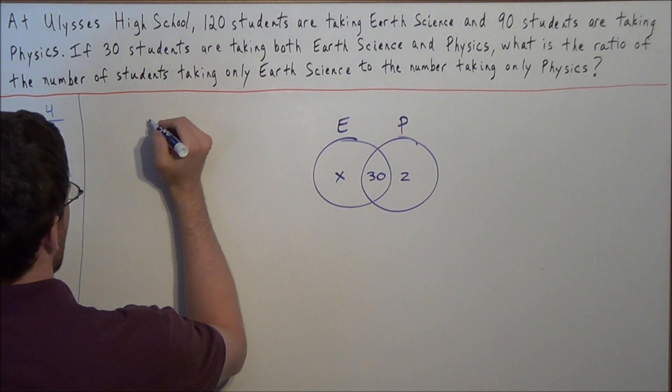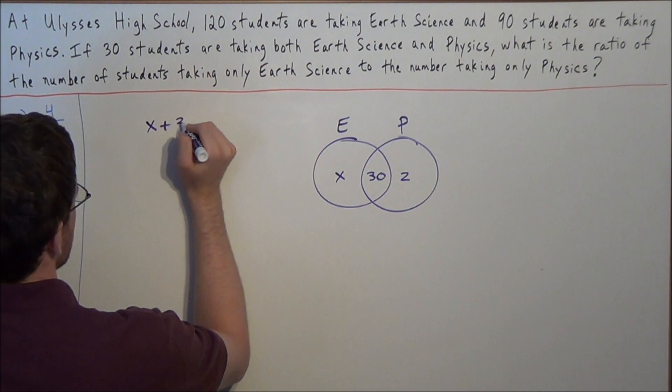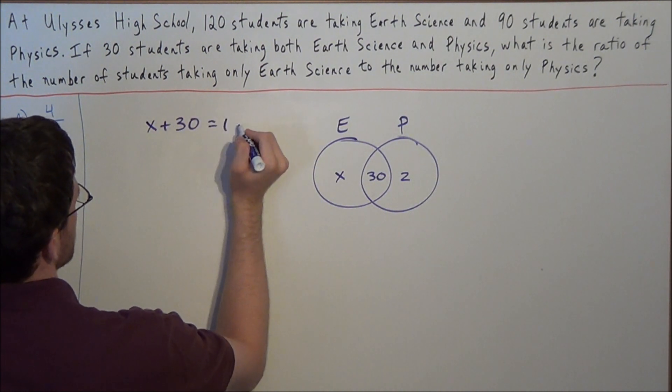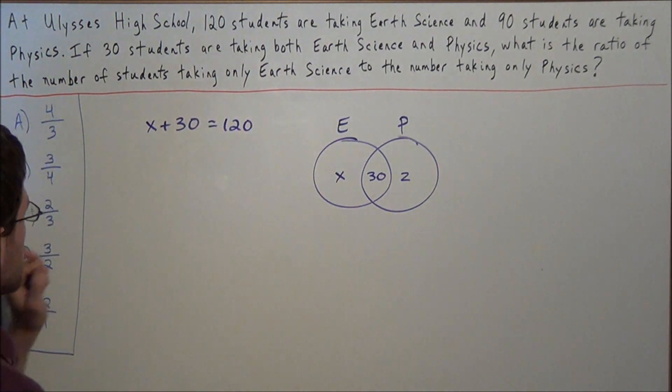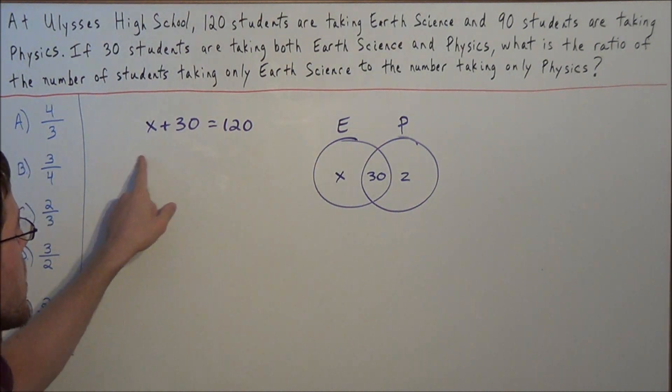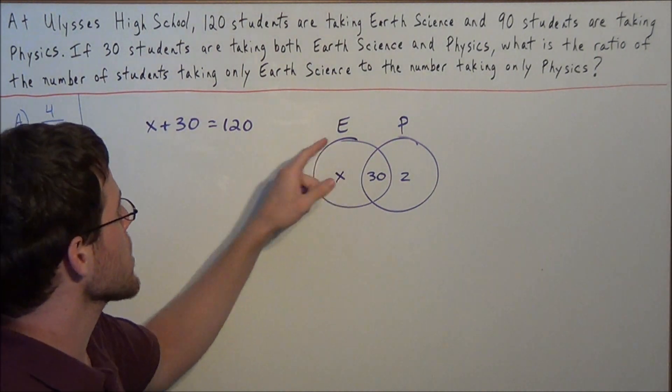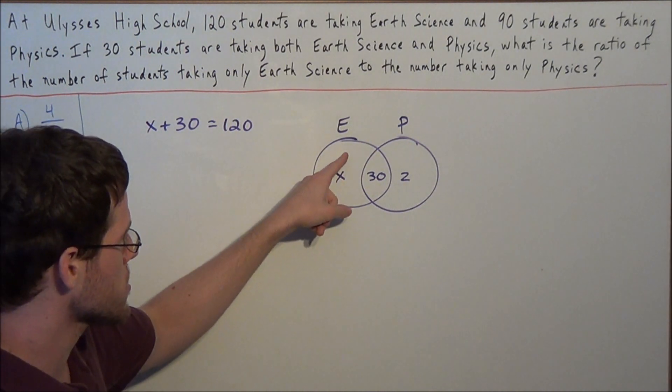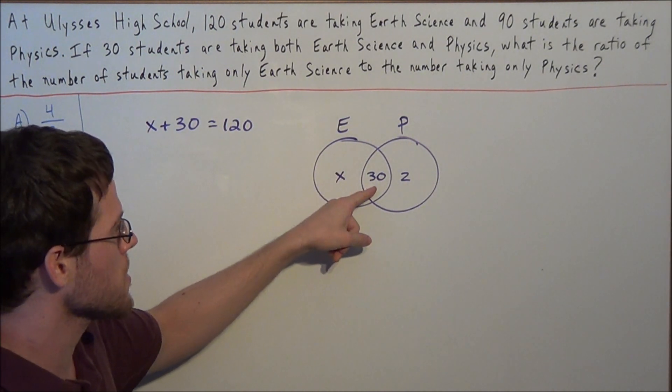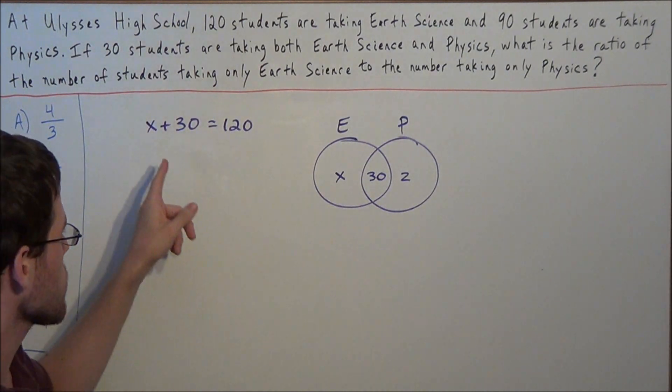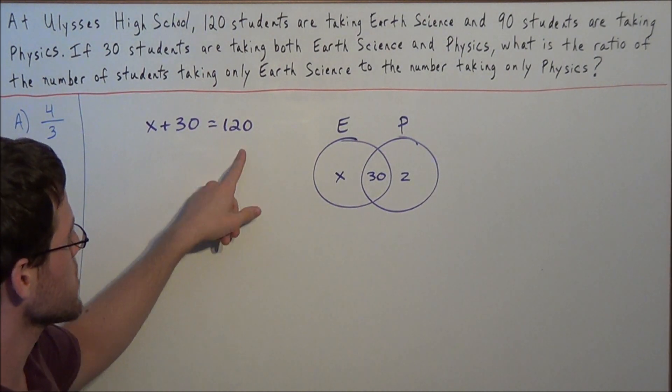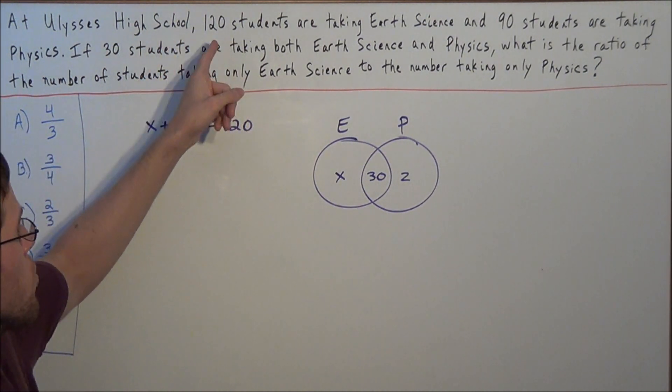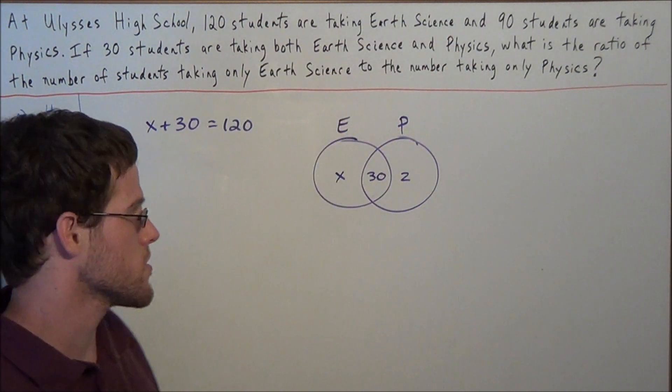And the reason why this is a valid equation, we know that the number of students taking Earth Science is made up of the students taking only Earth Science, and also the students taking both Earth Science and Physics. So that's why we're doing X plus 30, and we can set it equal to 120, because we're told that 120 students are taking Earth Science. So now to solve for X, we just subtract 30 from both sides of this equation.